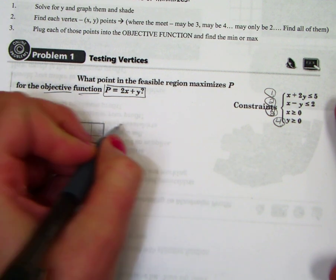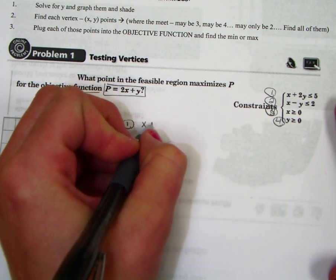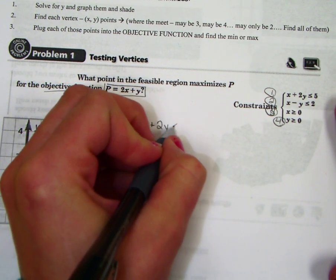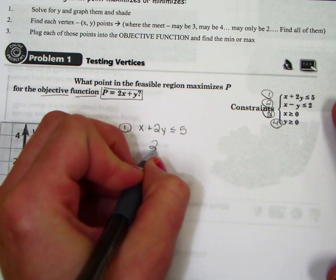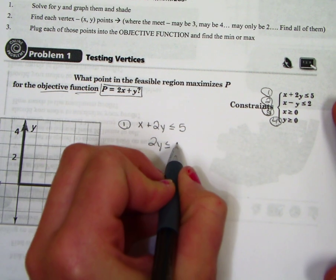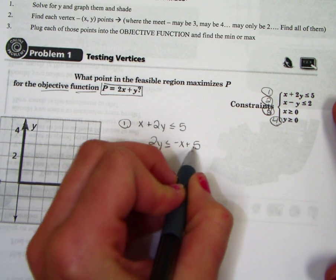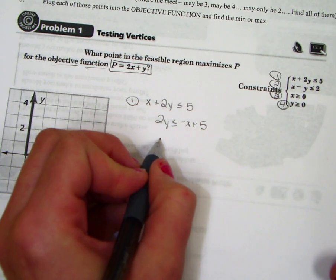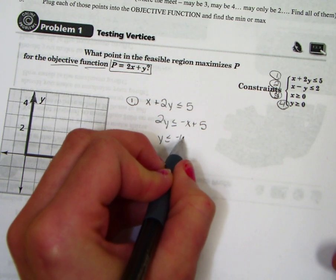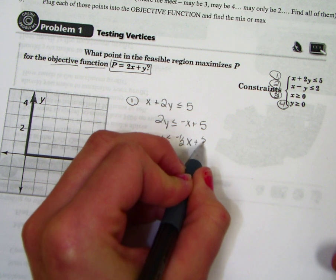And let's talk about number 1. We've got to solve this for y. So we have x plus 2y is less than or equal to 5. Take the x over. So 2y is less than or equal to negative x plus 5. I'm doing nothing new to you guys. We're just solving. And you get y is less than or equal to negative 1 half x plus 5 over 2.